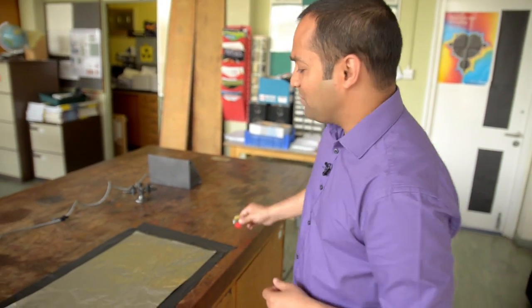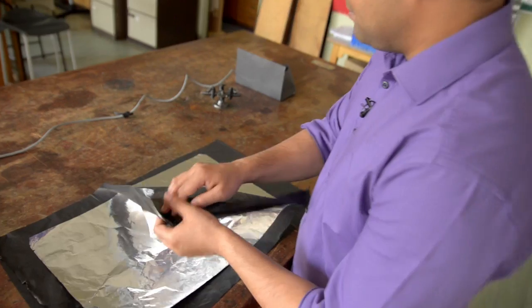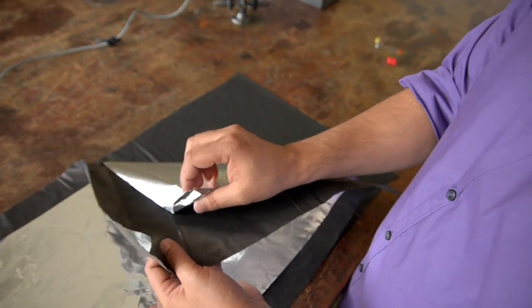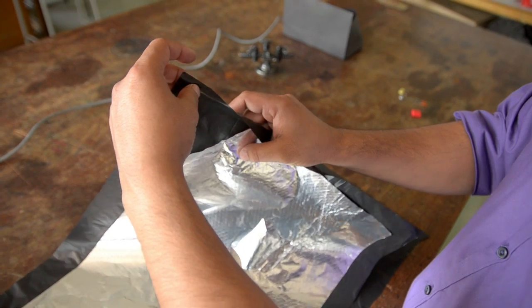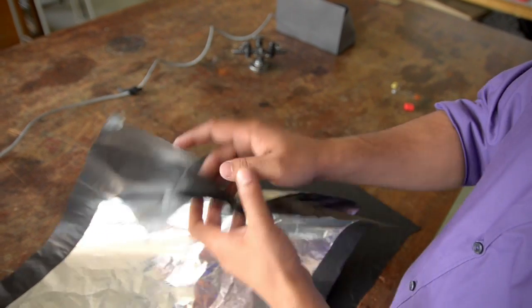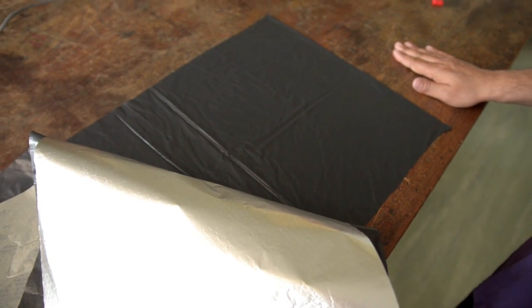You can introduce the topic of capacitors to your students using this large-scale model. What I've got here is two bits of foil for the plates, separated by this thin sheet of plastic that I've cut from a bin bag for the dielectric. The whole thing's resting on this other sheet of plastic to keep it insulated from the bench.